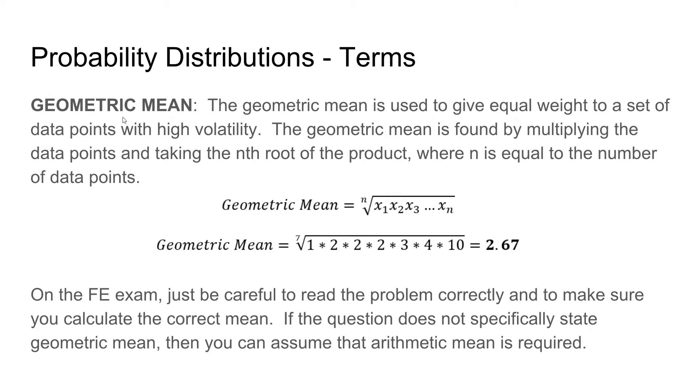The geometric mean is used to give equal weight to a set of data points with high volatility. The geometric mean is found by multiplying the data points and taking the nth root of the product, where n is equal to the number of data points. The equation is shown here, and if we use the previous data set, we get a geometric mean of 2.67.